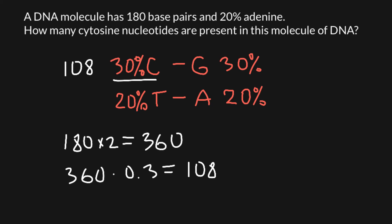So cytosine is represented here by 108 bases. That means that guanine is also represented in the same number.